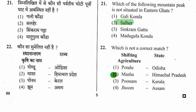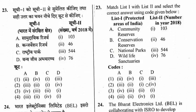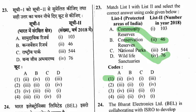Question 23: Match list 1 with list 2. The right option is option 1. The number of community reserves in India is 46. Conservation reserves in India is 76. National parks in India are 103. Wildlife sanctuaries in India are 554. This is a very important question — please remember it as it can appear in any other exam.